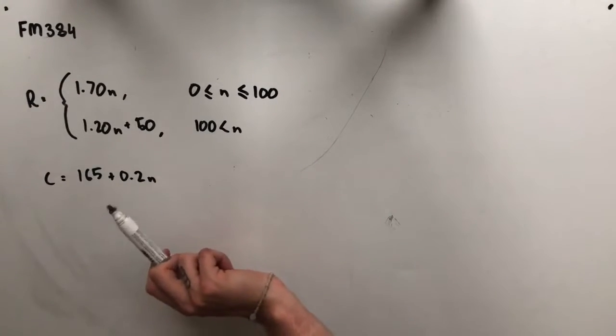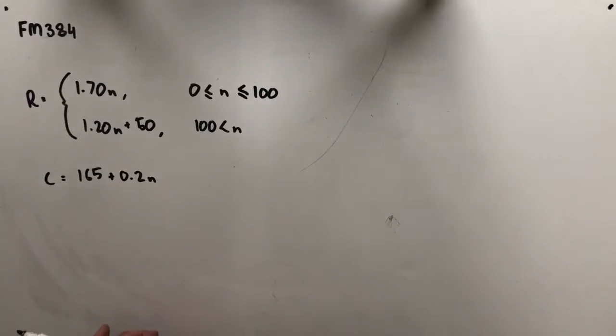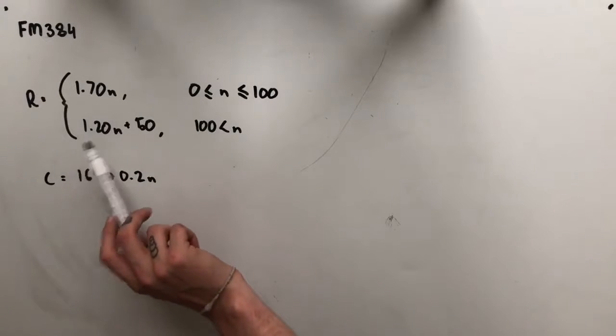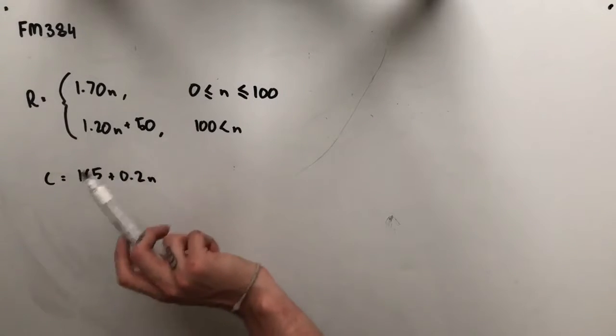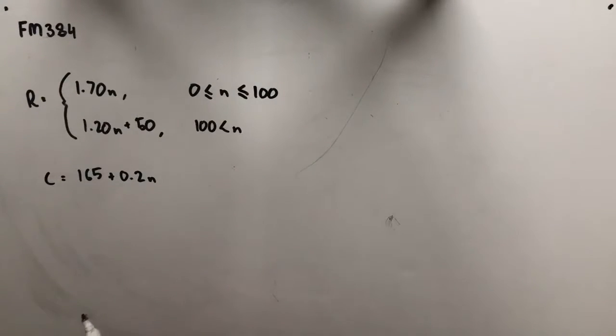Essentially what this rule is telling us is that the revenue is equal to $1.70 times the number of rolls sold for the first 100 rolls. After the 100th roll is sold, we move to this equation over here, which means that the revenue is equal to 1.2 times the number of scrolls plus 50 for every value of N that is greater than 100. The cost C in dollars of making N delicious cheese and Vegemite scrolls each day is 165 plus 0.2 times the number of rolls.